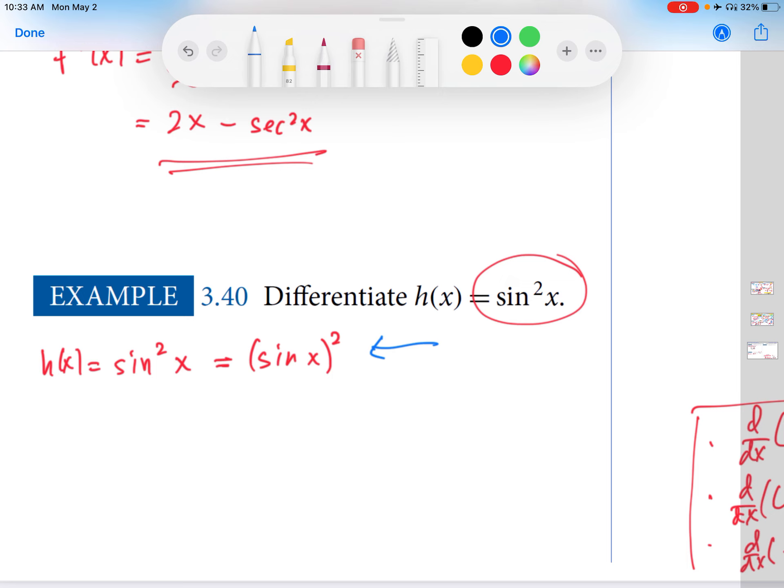So if I want to differentiate h of x in this case, what do I do? Well, it's the composite of something squared with sine x. So the outer function is something squared. Its derivative is 2 something to the first. So we substitute in sine x and then multiply by the derivative of sine x.